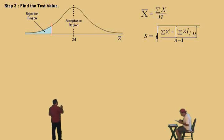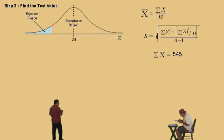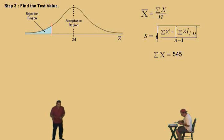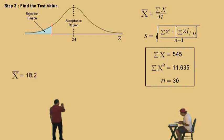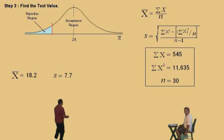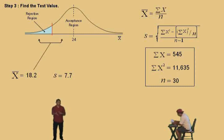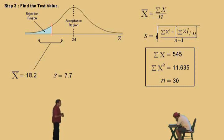First, sum up all your data values — you should get 545. Then sum up the square of each data value — square each one individually and add them up — you should get 11,635. N equals 30. Our sample mean is the summation of X divided by N, which gives us 18.2, and our sample standard deviation is 7.7. Notice our sample mean of 18.2 is less than 24, which agrees with the researcher's claim, but we have to see if that's a significant enough result to support what the researcher said.